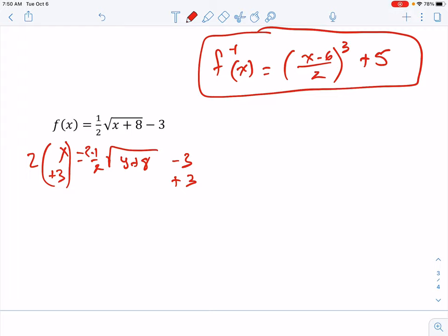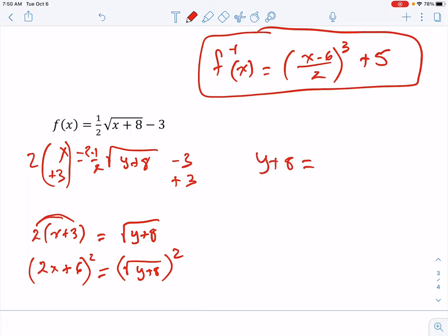So I have 2 times x plus 3 is equal to the square root of y plus 8. Now we're going to take both sides and square it. It might be easier to just distribute this 2. So that's 2x plus 6 equals the square root of y plus 8. We're going to square both sides. So y plus 8 is equal to 2x plus 6 squared. We're going to minus 8 on both sides. And change your y to f inverse of x.